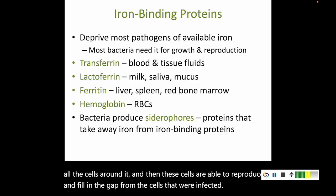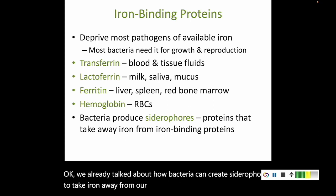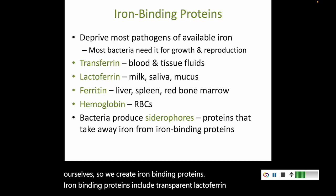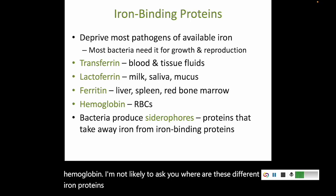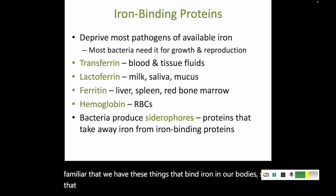We already talked about how bacteria can create siderophores to take iron away from our bodies. Our bodies want the iron for ourselves, so we create iron-binding proteins. Iron-binding proteins include transferrin, lactoferrin, ferritin, and hemoglobin. You just need to be familiar that we have these things that bind iron in our bodies, which helps us and also limits the availability of iron for bacteria to grow.